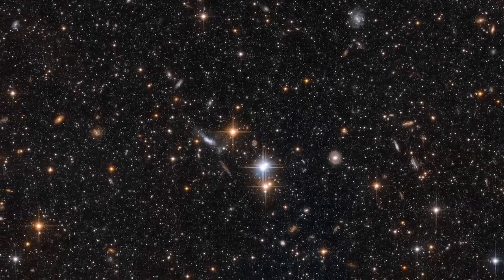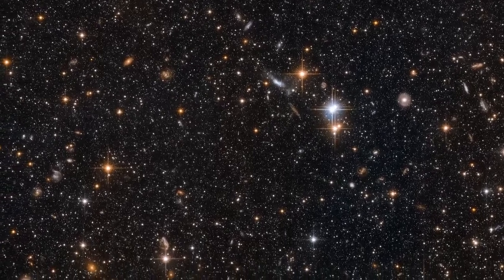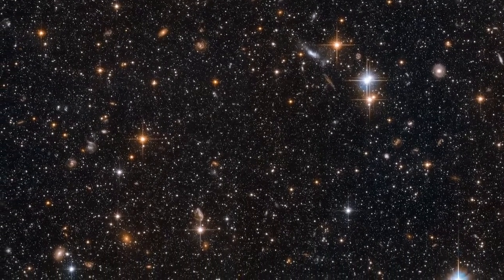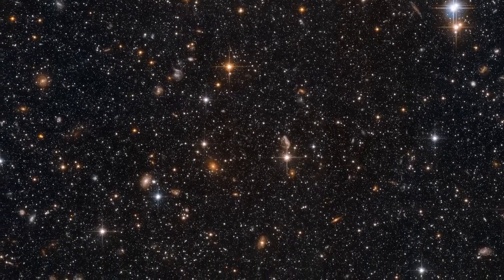Busy as these images look, we're only in the outskirts of the Andromeda galaxy here. That's because these observations were made in order to study a particular type of variable star that is common in the outer reaches of galaxies.